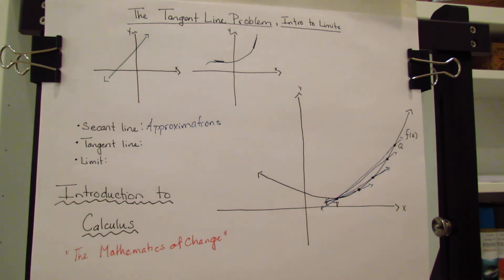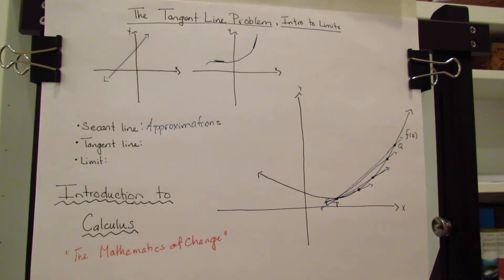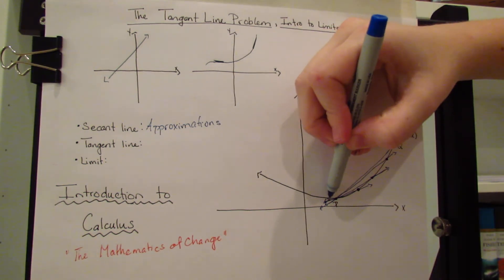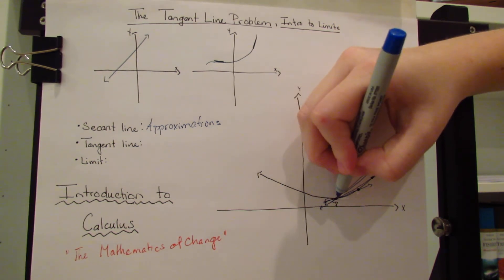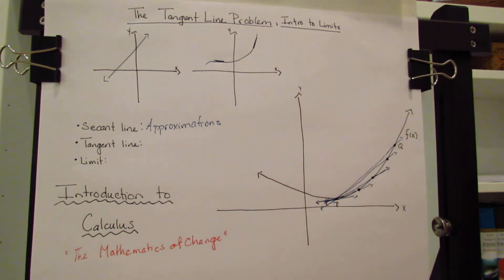Now, as we said before, as Q gets closer and closer to P, the secant lines get more and more accurate. Until finally, when Q actually gets to P, we're going to come up with a line right here that shows you the actual slope at P.